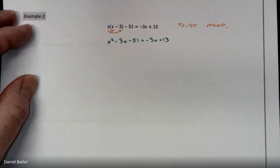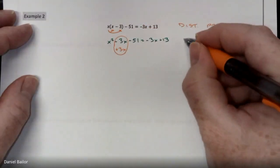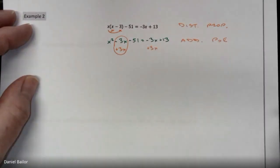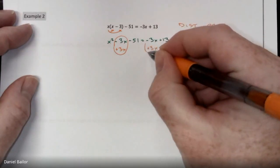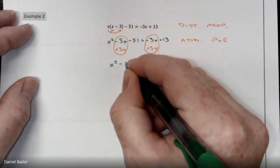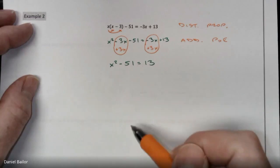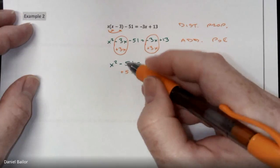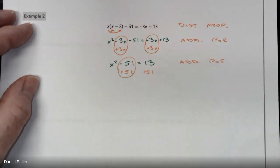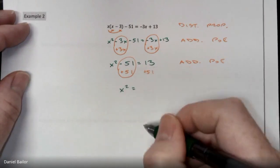I can make some zeros: I'll add 3x to both sides using the addition property of equality, because negative 3x plus 3x is zero, and on the right side minus 3x plus 3x is also zero. So I get x squared minus 51 equals 13. Then I add 51 to both sides using the addition property of equality, and 13 plus 51 is 64, so x squared equals 64.